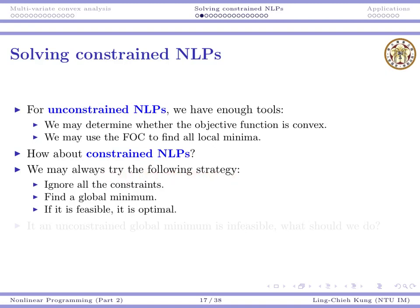We may still try the following strategy. First, let's ignore or relax all the constraints. And then find a global unconstrained minima. That's something we may do. If we are lucky that that global unconstrained minima is feasible, then of course it is optimal. No feasible point can be better than that. So if we are lucky, then it is optimal. But of course, we may be unlucky. If an unconstrained global minima is infeasible, what should we do?